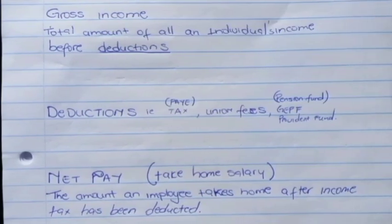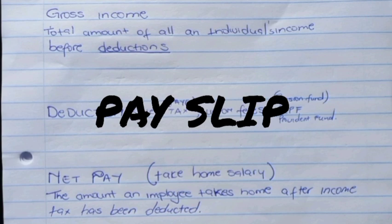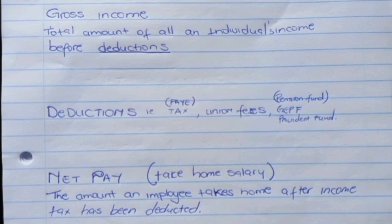Let's get to the next terminologies. We're going to look at gross income, deductions, and net pay. Before we look at those, there's a term I need us to know, which is pay slip — also known as a salary advice. In this document, which is your income document, you will find terms like gross income, deductions, and net pay.